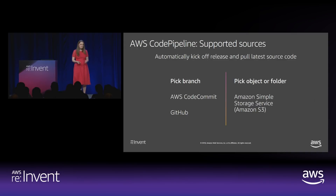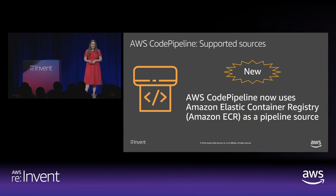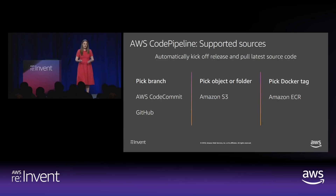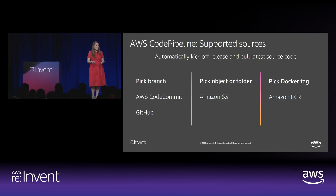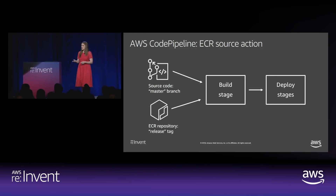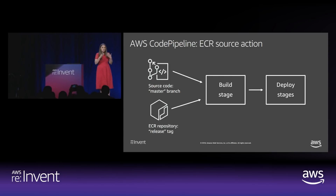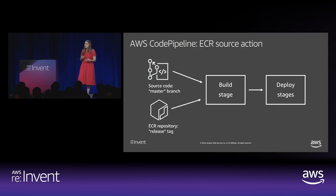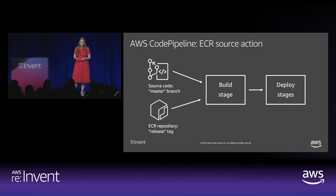So many times we have a base image or a sidecar image that we need to bundle into our application or build a new image on top of. I'm super happy to announce launch number one: AWS CodePipeline now uses Amazon Elastic Container Registry — ECR — as a pipeline source. You now have a third option for what triggers your pipeline: pick a Docker tag. If you have a base image, you can pick the release tag from that image in the registry and trigger the pipeline on that. So your source code with your main application Dockerfile and your ECR repository with that base image release tag can both feed into the build stage.